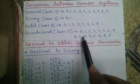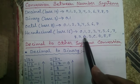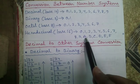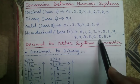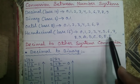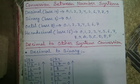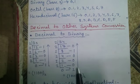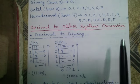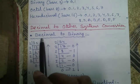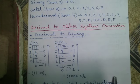One more thing: in hexadecimal, after 9, A is written as 10, B as 11, C as 12, D as 13, E as 14, and F as 15. Now the conversions — decimal to other number system conversion, starting with decimal to binary conversion.